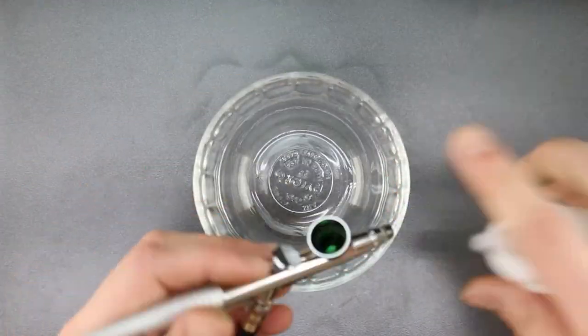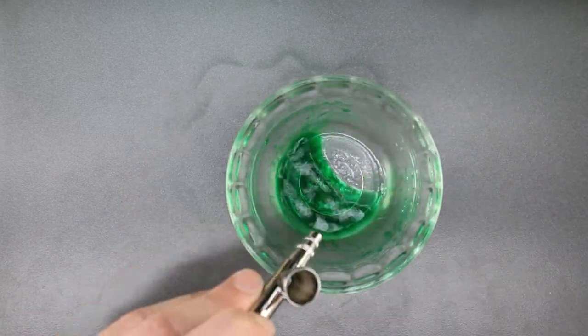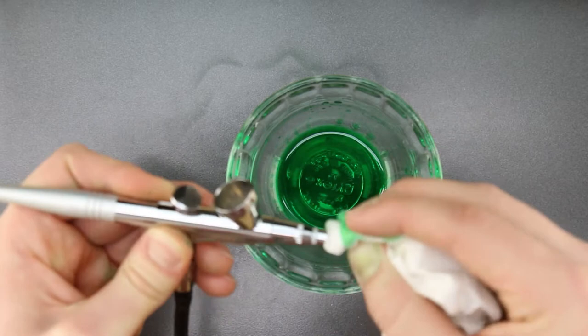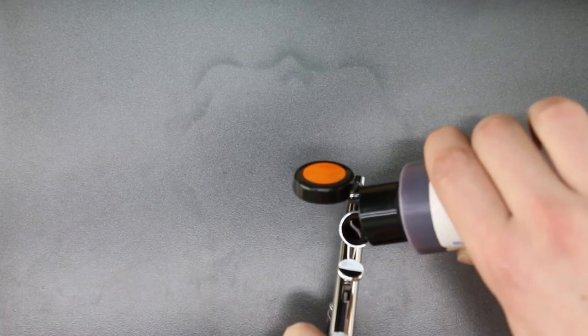Before adding orange food color to the airbrush, clear out the green using vodka. Wipe away any color from the tip, let the vodka evaporate, and add orange food coloring to the airbrush.